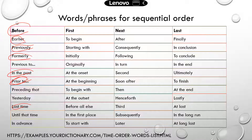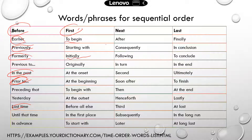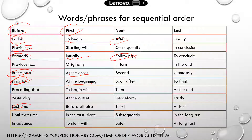There are also words or phrases that indicate what happens first — that could be to begin with, initially, at the onset, at the beginning. And then what happens next: after something, or following, or soon after, then, subsequently.